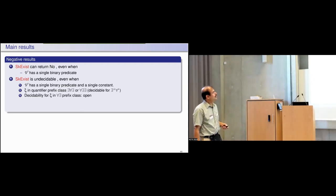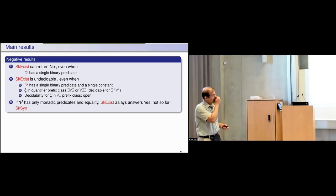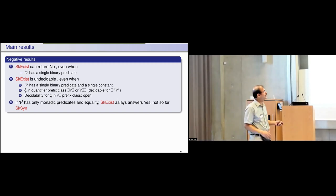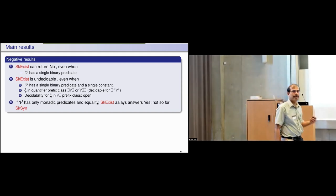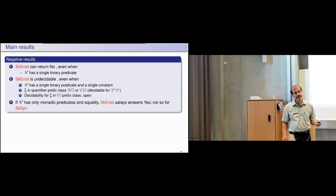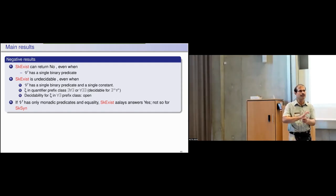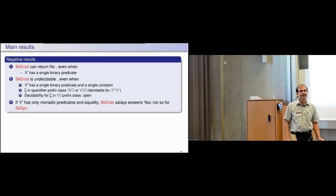There is one class which would complete this scenario for which we don't know: if it is just a single for-all and a single exists, we do not know. Put an exists before it and it is undecidable; put an exists after it and it is undecidable. But just a single for-all with a single exists — we do not know. And it does not take much to hit these negative results.